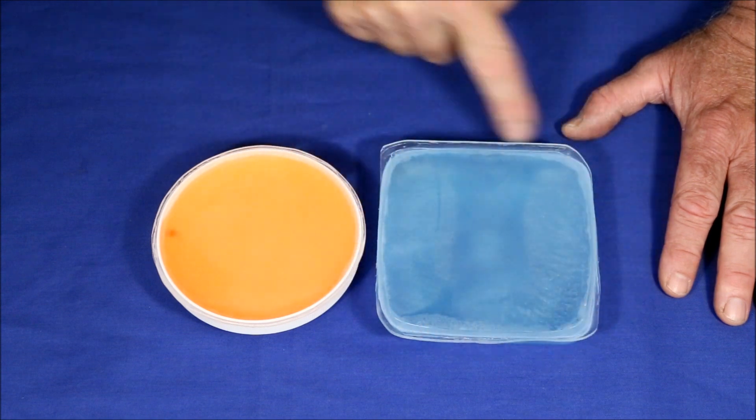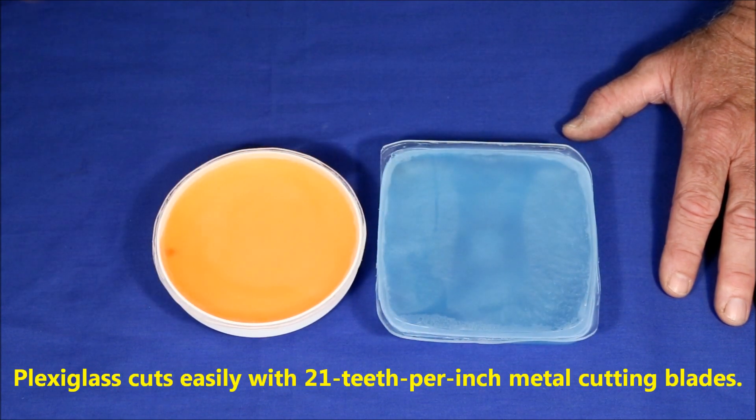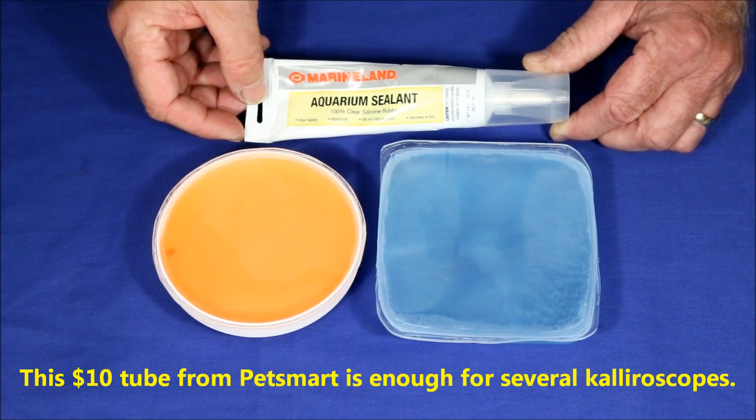Next, I cut plexiglass pieces to act as the windows and glued them to the bases using aquarium sealant. This will take two days to fully cure.